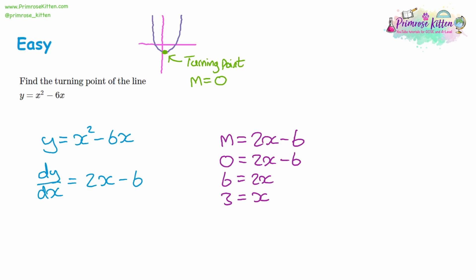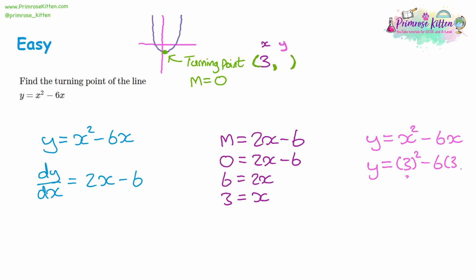The turning point is a coordinate with an x and y value. We've found x equals three, so we substitute into the original line y equals x squared minus six x to find y. Three squared is nine, six times three is eighteen, so nine take away eighteen gives y equals negative nine. The turning point of this curve is at the coordinate (3, −9). We've exploited the fact that the gradient is zero at the turning point.